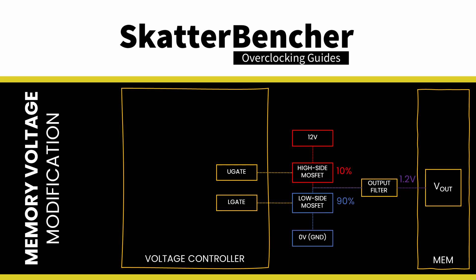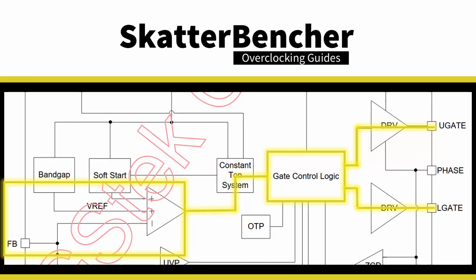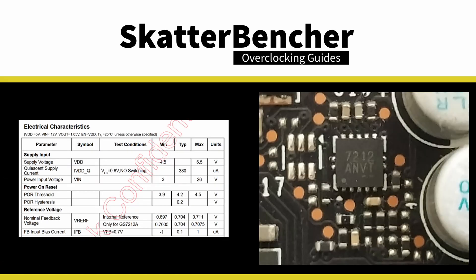For example, let's say the MOSFET switches on the high side (12V) 10% of the time, and the low side (0V) 90% of the time. The average voltage output of the MOSFET is then 12V × 10% plus 0V × 90%, so 1.2V. In the functional block diagram, we find that the gate control logic is driven by comparing the reference voltage VREF and feedback voltage FB. As defined in the electrical characteristics section of the datasheet, on the GSTech GS7212, the reference voltage VREF is an internal non-adjustable voltage of around 0.7V.